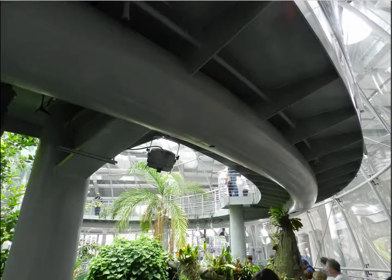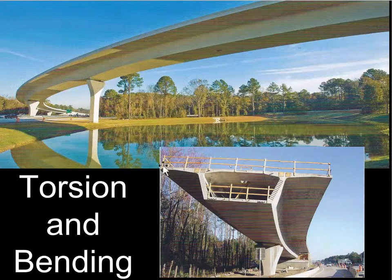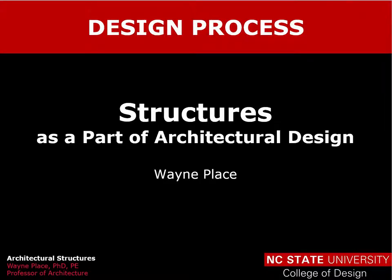This is what that looks like from down below, going from one support point to the other. In a similar situation, this curved beam addresses bending with a wide top flange and a wide bottom flange, and addresses torsion by the creation of a tubular part of the cross section. That ends our lecture on structures as part of the overall architectural design process.